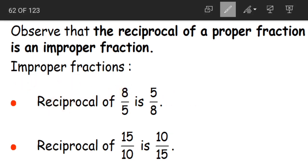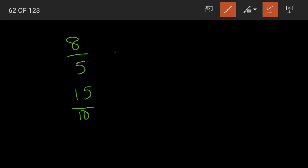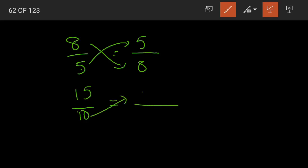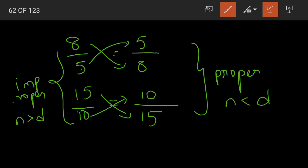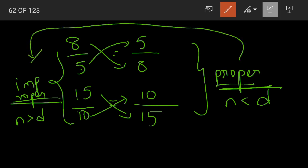For improper fractions: we have 8/5 and 15/10. The reciprocal of 8/5 is 5/8, and the reciprocal of 15/10 is 10/15. We started with improper fractions where numerators are greater than denominators. When we write the reciprocals, they become proper fractions where numerators are less than denominators. So the reciprocal of an improper fraction is a proper fraction.